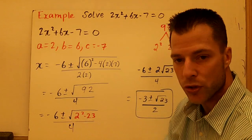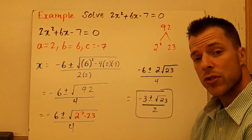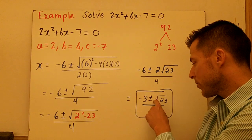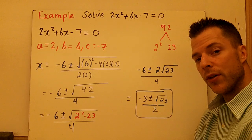Don't square root 23 and get a decimal and try to get the answer. Just leave your answer here. There are 2 solutions: negative 3 plus root 23 all over 2, and negative 3 minus root 23 all over 2.